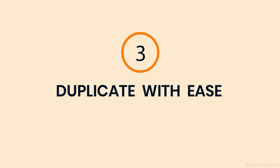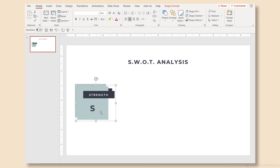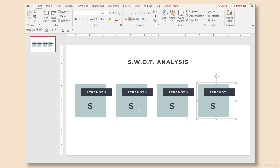Number three: duplicate with ease. Nothing is easier than creating a copy of an object — we all know about copy and paste. But what if you want to create several identical copies? There is a better way. Let's say you created the perfect shape but need three identical copies. Instead of copy and paste, use the shortcut Ctrl+D. Then position the copy where you want it and press Ctrl+D two more times. This positions the new shapes perfectly aligned with the exact same spacing. Pretty neat!